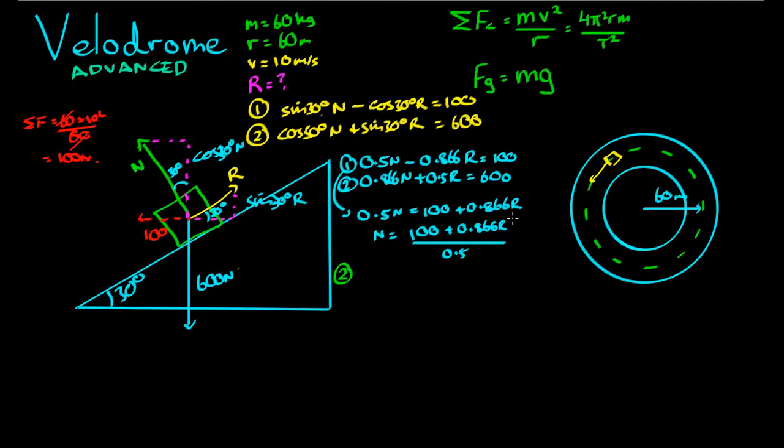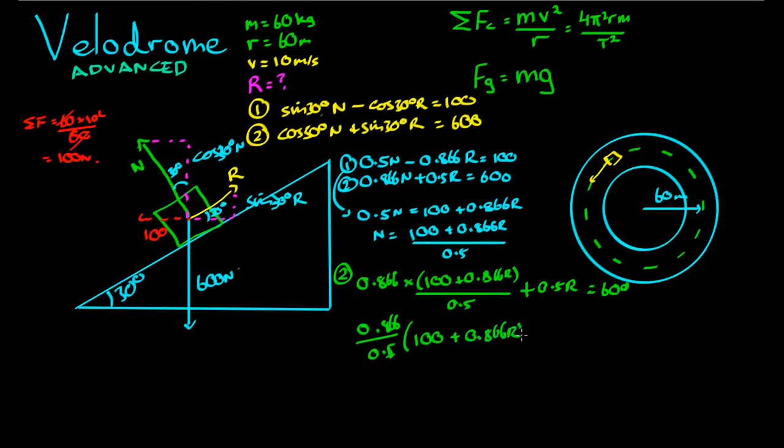So we rewrite the second equation, but instead of putting N, we put this because this is equivalent to N. So we have 0.866 times 100 plus 0.866 R divided by 0.5 plus 0.5 R equals 600.